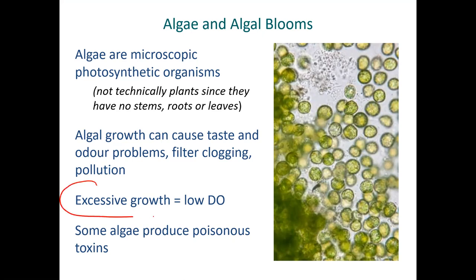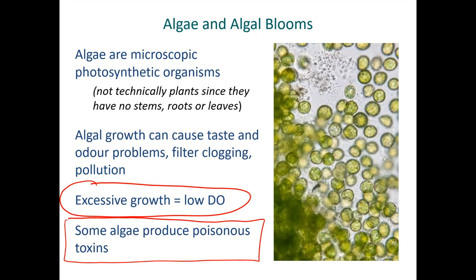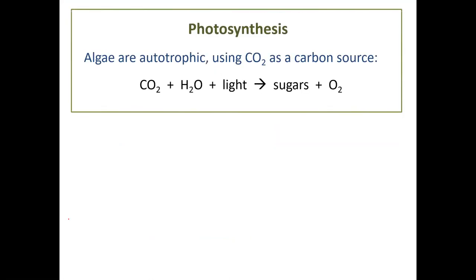The key point is that excessive growth of algae can actually lead to low dissolved oxygen — and that is a huge problem. It kind of doesn't make sense since algae are making oxygen, but it has a lot to do with their depth, which we'll discuss in a moment. Another concern in some places is that certain algae produce poisonous toxins — if you look up red tide, there's a red type of algae that can produce toxins and kill fish if it overgrows.